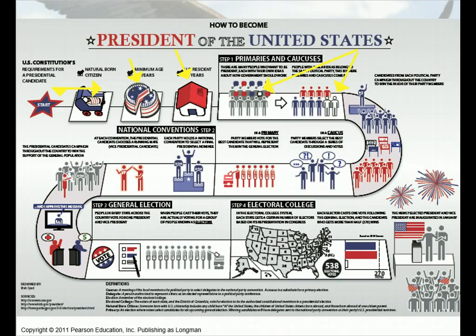There are also open primaries, closed primaries, and blanket primaries. An open primary means that you can just walk in and participate in any of the primary elections you want, as long as it's one. You walk in and choose to stand in line for the Republicans or the Democrats — you don't have to register or indicate ahead of time. In a closed primary, you're only allowed to vote if you have selected that party ahead of time. And in a blanket primary, everybody's on one ballot and you just choose.